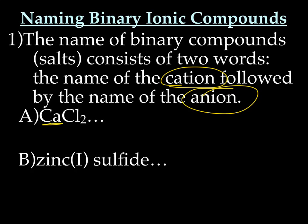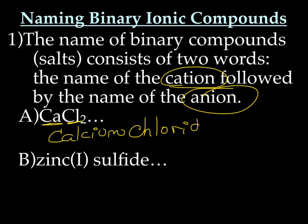Ca is from group 2A, which means when we name it we don't need to use a Roman numeral or anything — we just write the name. So Ca is calcium. The anion is Cl here. Cl is chlorine, but it's the anion so we have to drop the ending — we drop the '-ine' and we have chloride. So this is calcium chloride. It doesn't matter that there are two chlorines; the name is just calcium chloride.